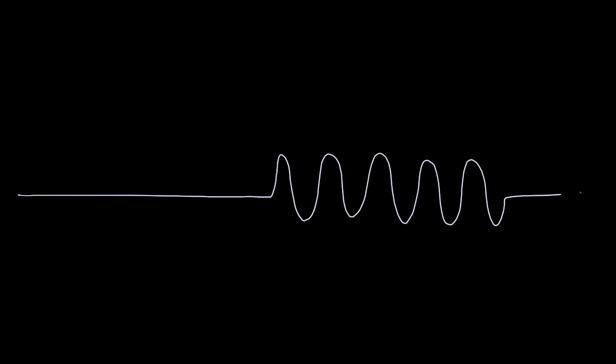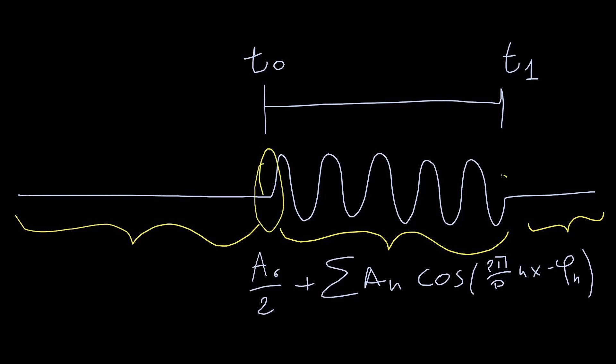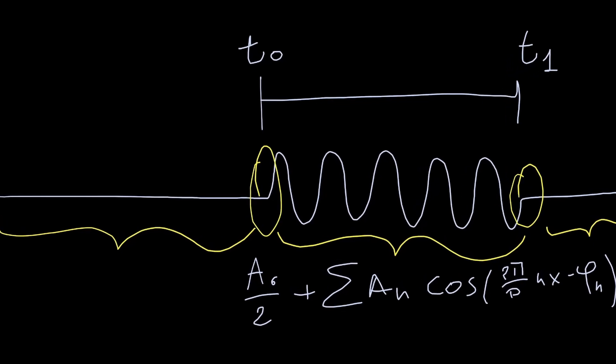As a result, we need more than one sine function in the Fourier decomposition. We need to reproduce the part with the music, as well as the part without the music, and the transition from one to the next. As the time we play the note gets shorter, we need more and more sines with different frequencies to accurately represent our data.